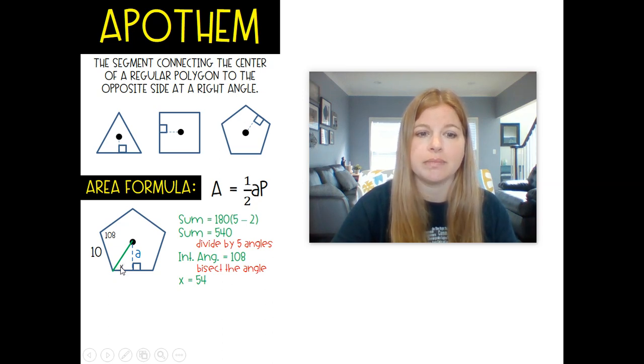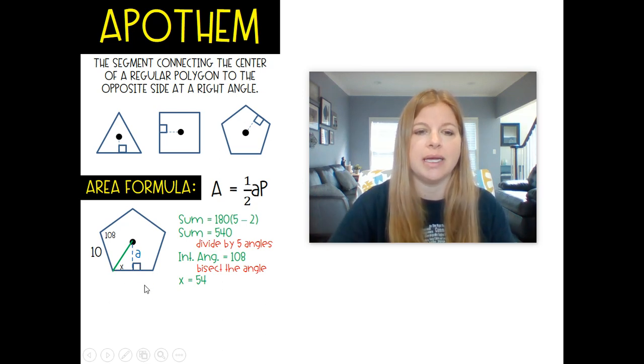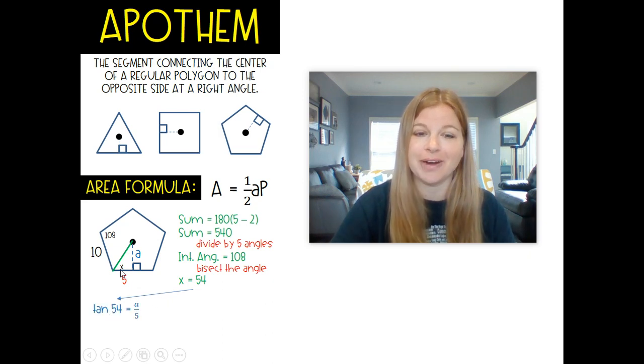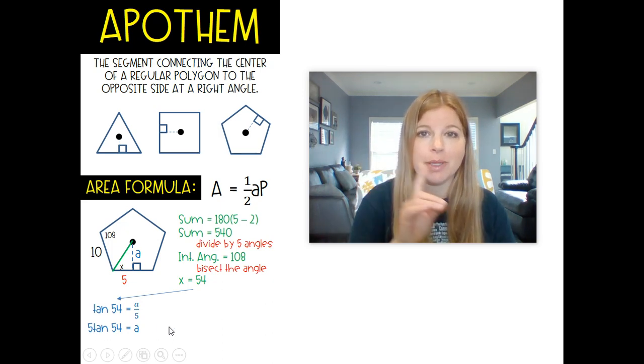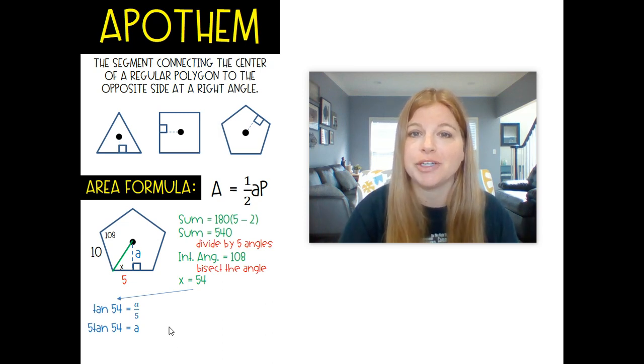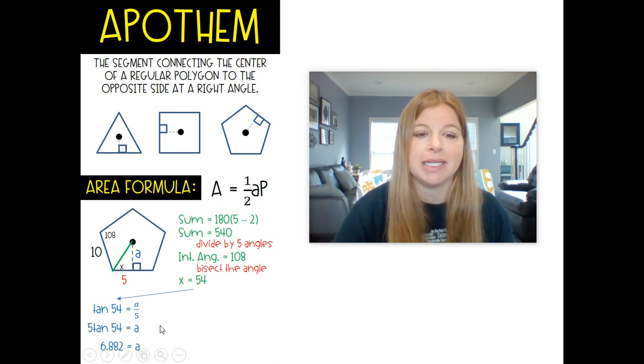So I find the sum of all of the angles, divide it by how many angles there are, and then I divide that angle by two to figure out this angle measure. This is 54. I still need to figure out this apothem. The entire side length is 10, and this apothem bisects that side, so this length is 5. Which trig function from the angle works with the opposite side and the adjacent side to it? It's tangent. So tan 54 equals a over 5, we multiply both sides by 5, and we get 6.882.